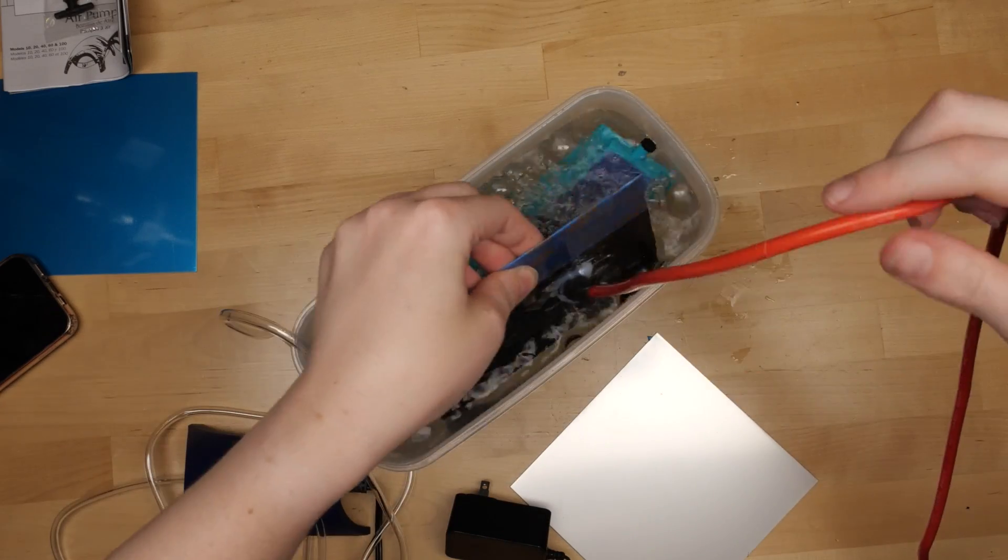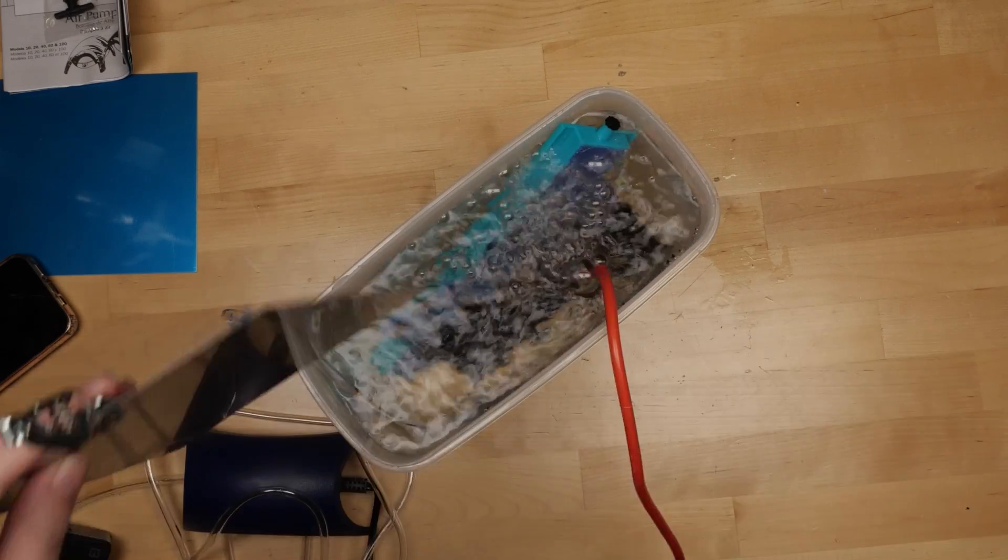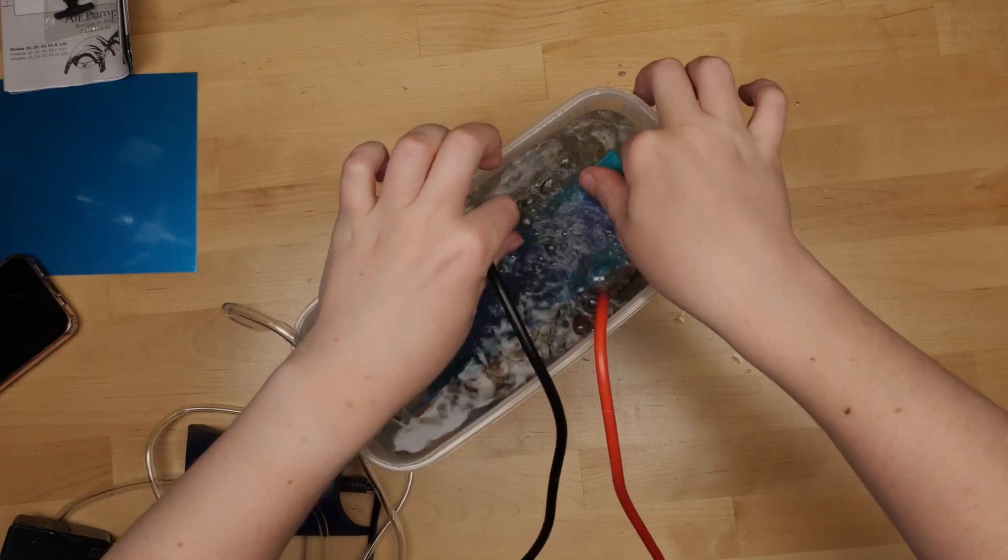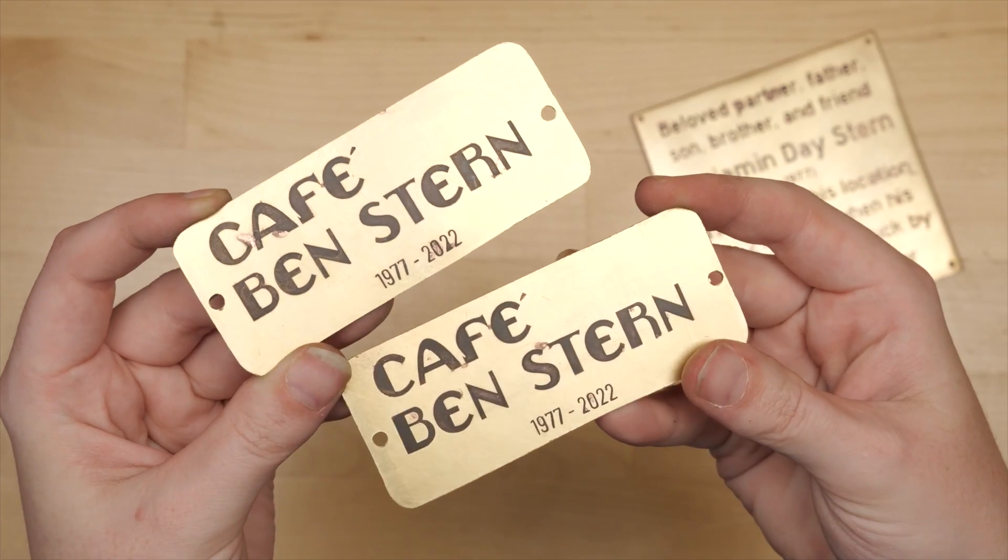Hey, it's Becky. Today's project is electro etching, making permanent designs in metal using a few common things you can find around the house.